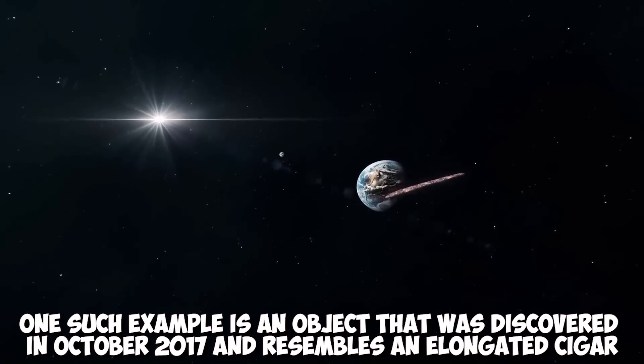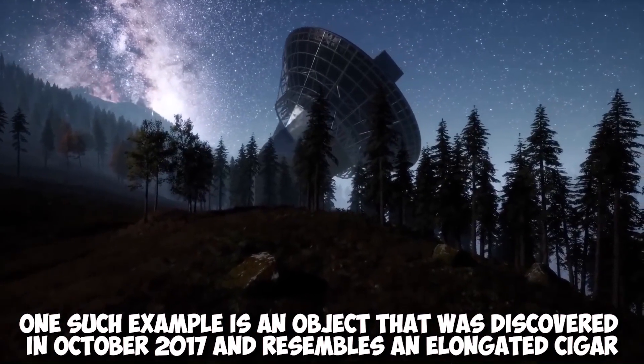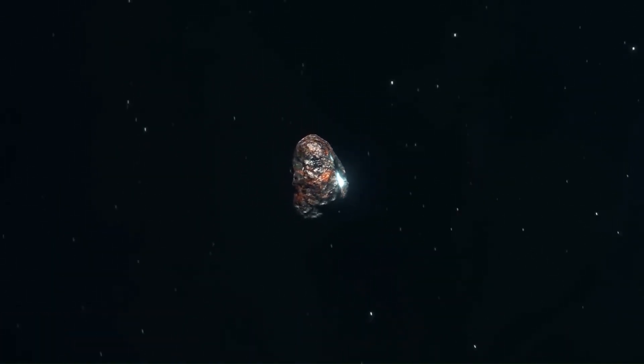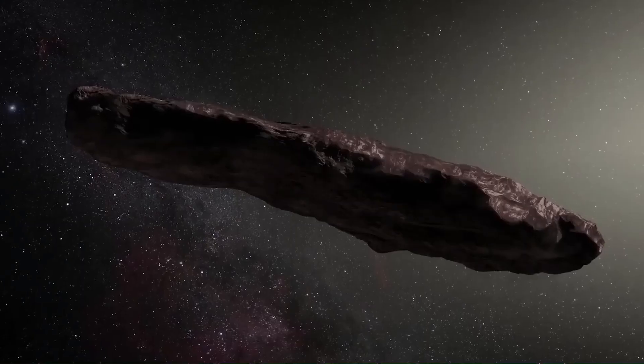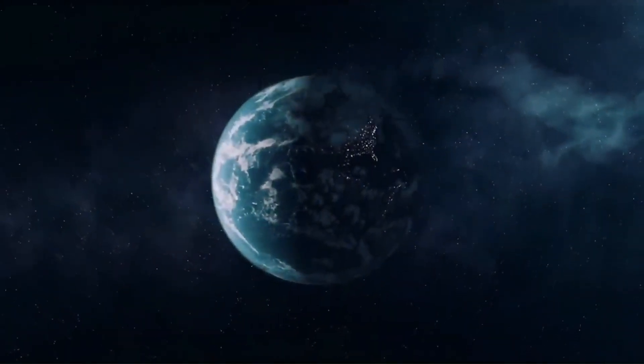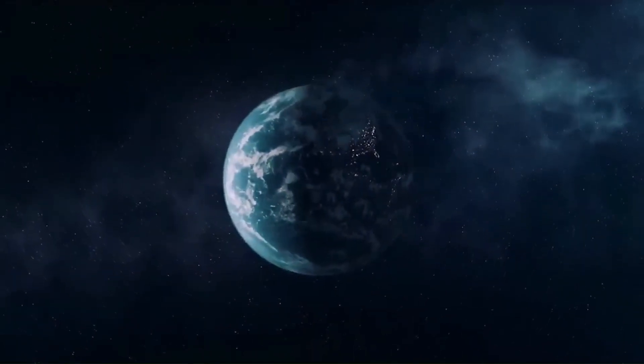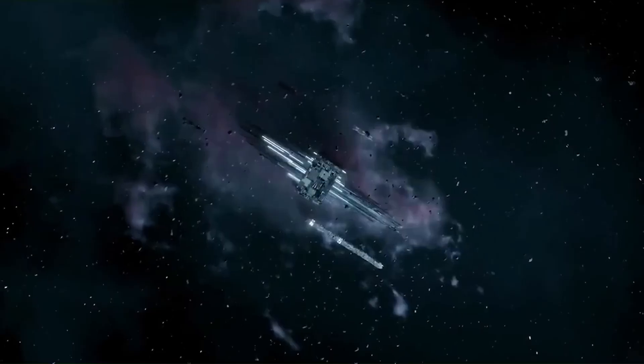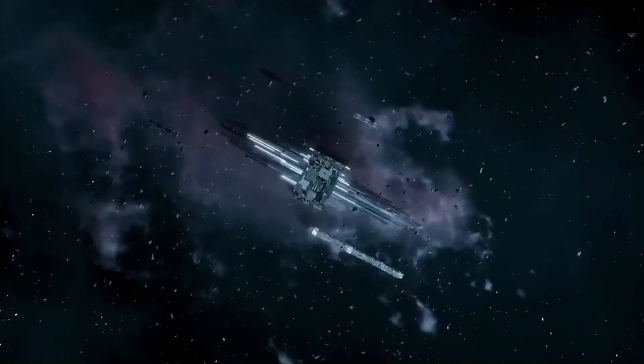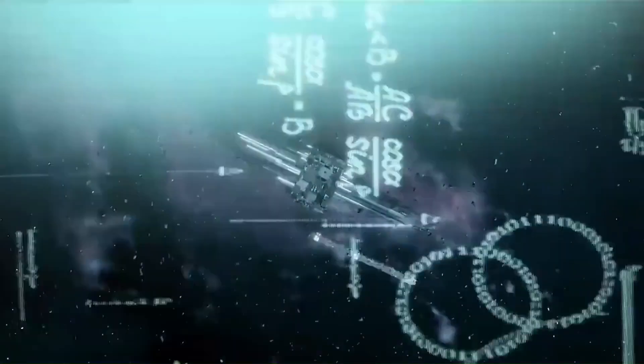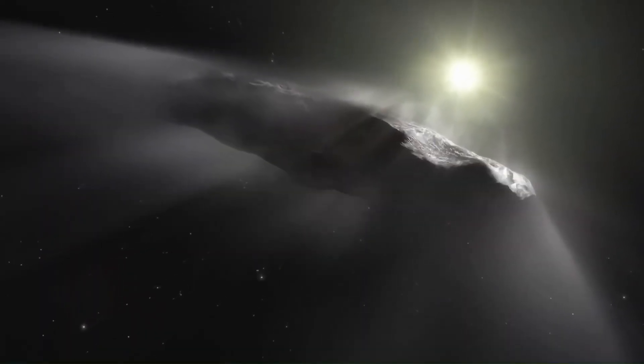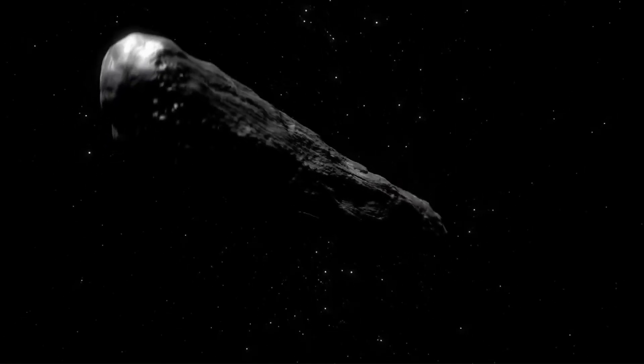One such example is an object that was discovered in October 2017 and resembles an elongated cigar. It was the first ever discovered interstellar visitor from a far-off unknown solar system and it was given the Hawaiian name Oumuamua, which means a messenger from afar arriving first. The astronomer who made the initial discovery, Robert Warrick of the University of Hawaii, recognized right away from its speed that he was looking at something new to physics. This wasn't your typical comet or asteroid, rather it was the first ever discovered interstellar visitor.